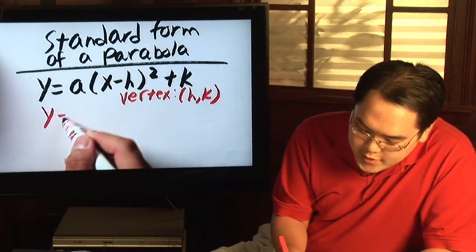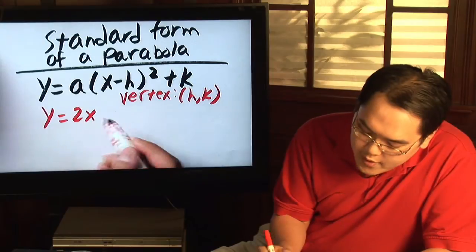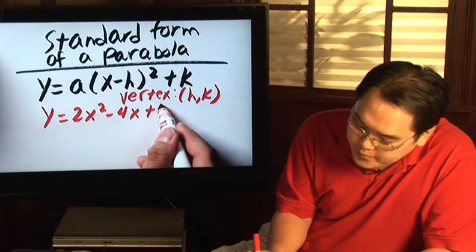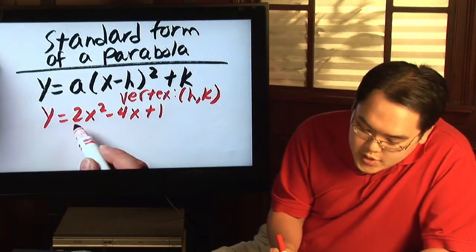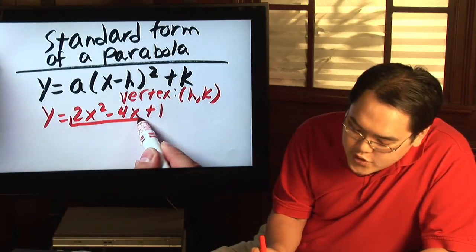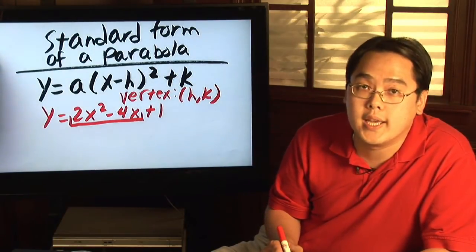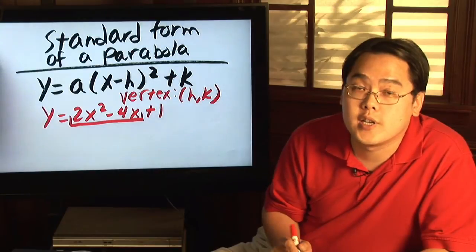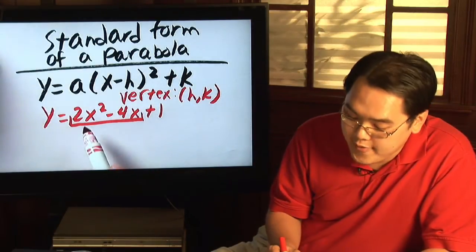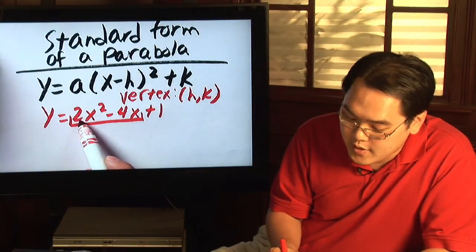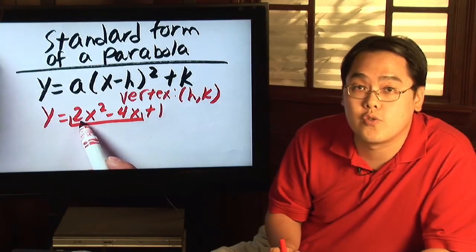Suppose you have a polynomial of the form 2x squared minus 4x plus 1. First and foremost, you focus on these first two terms, and those two terms only. Now, you need to factor, but in order to complete the square, you have to factor out this first number. So you have to factor out a 2 from these two terms.